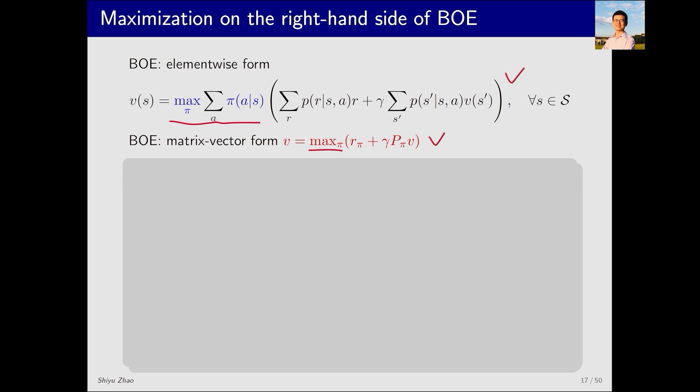For instance, in this equation, we have an unknown quantity, v. Even though v is a vector, we simply treat it as an unknown. Besides this unknown, we also need to solve π. For every state, we must identify the optimal π. This means that we have one equation but need to solve two unknowns. How can this be done?